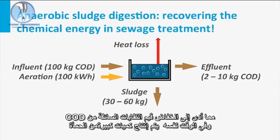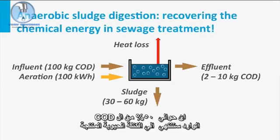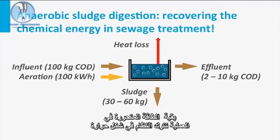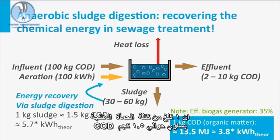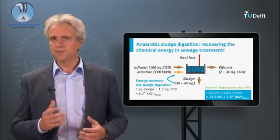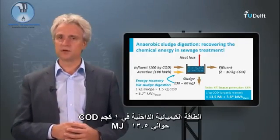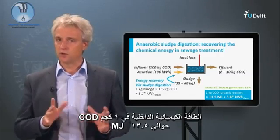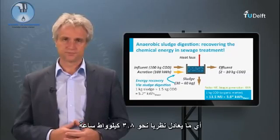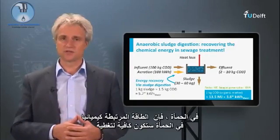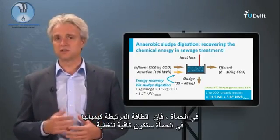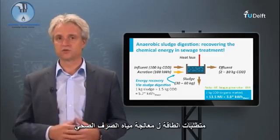About 50% of the incoming COD will end up in the biomass produced, with the rest leaving the system as heat. One kg of produced sludge mass equals about 1.5 kg of COD. The chemical energy enclosed in 1 kg of COD is about 13.5 MJ, which theoretically equals about 3.8 kWh. If 50% of the COD entering the sewage treatment plant ends up in sludge, the chemically bound energy in the sludge would be sufficient to cover the energy requirement for sewage treatment.